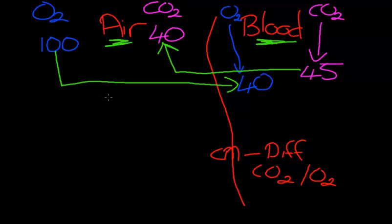So, this is what happens in the lungs. Oxygen diffuses from the higher concentration air side into the blood, and carbon dioxide diffuses from the higher concentration blood side back into the air.